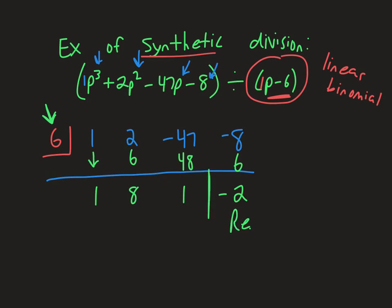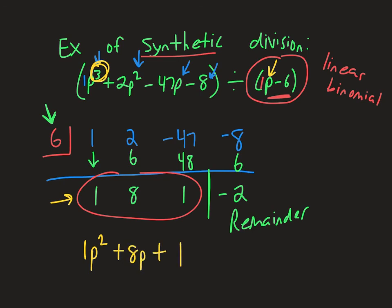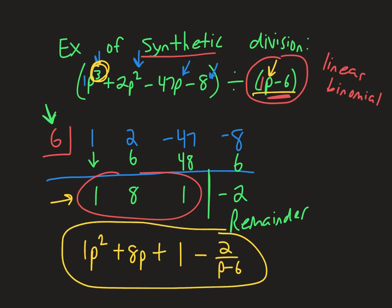And that last number there is going to be our remainder. And the cool thing is, the other numbers that we got, the 1, the 8, and the 1, those are going to be the coefficients of our answer. And the trick is, or the thing to remember, we started out with a third degree polynomial, and since we divided by a first degree, our answer will then be a second degree, because we started with a third, and we kind of divided one away. So the coefficients of our answer are going to be here. It's going to be 1 for the p squared plus 8 for the p plus 1, and then our remainder goes over the p minus 6. And if we compare that to the answer we got when we did long division, p squared plus 8p plus 1 minus 2 over p minus 6. And that is synthetic division.